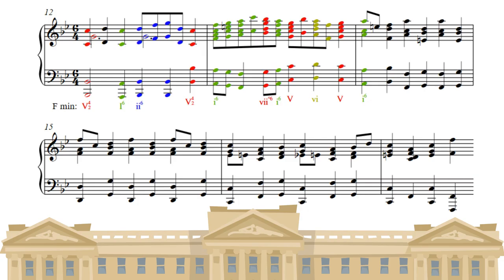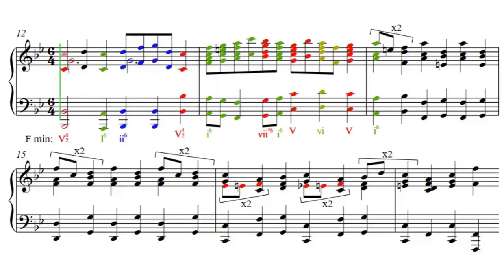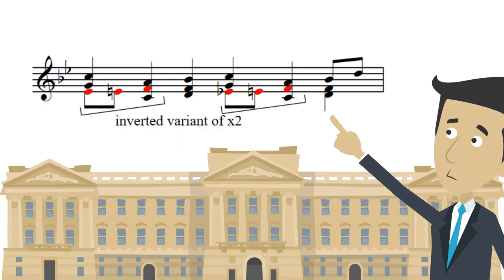Measures 12 to 17 is modulated to F minor. In measures 12 to 14, cell X2 appears four times, with two inverted variants.